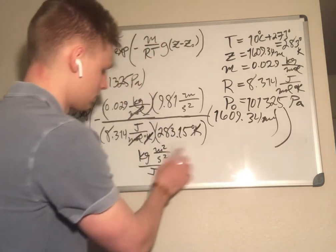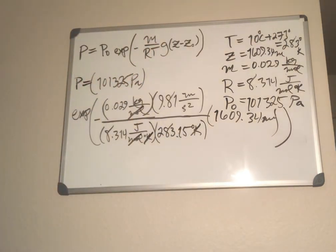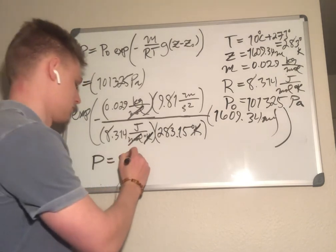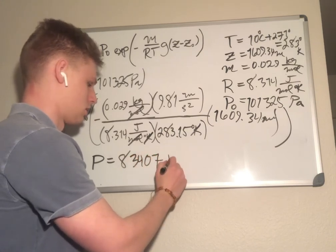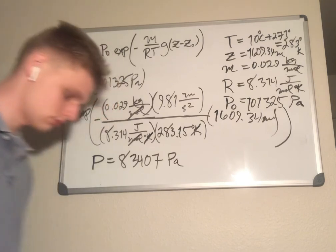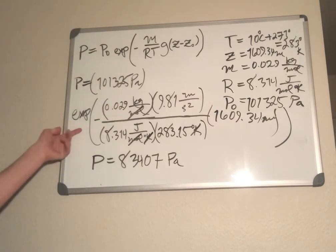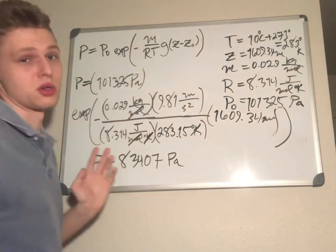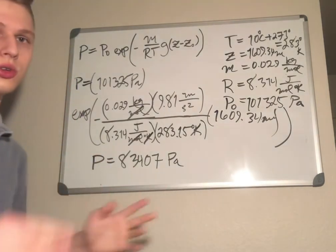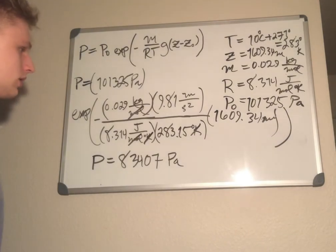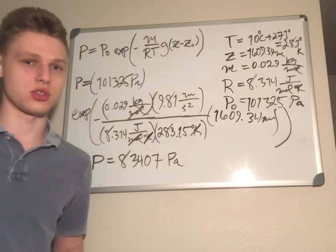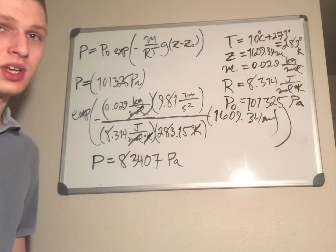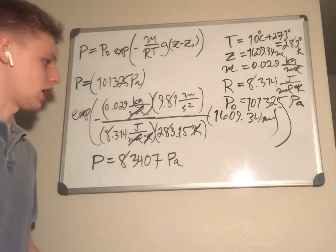Tell me in the comments if I'm wrong, but the answer is P is equal to 83,407 pascals. Everything inside of an exponent is unitless. Everything is unitless inside of an exponent, and that's all that I've learned. Maybe there's some magical equation that has units in its exponents - I don't know, I've never seen it.